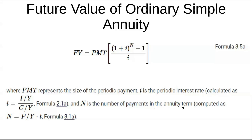N is the number of payments in the annuity term, calculated by multiplying the number of payments per year by the number of years T. For example, if you're paying monthly for five years, N equals 12 multiplied by 5, giving you 60 payments. Those are all the parts you need: the payment, the periodic interest rate, and N.